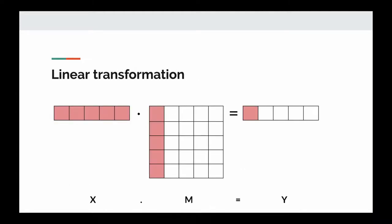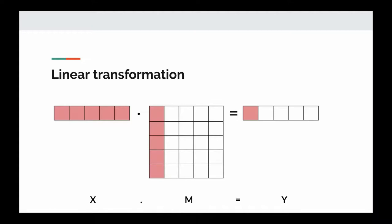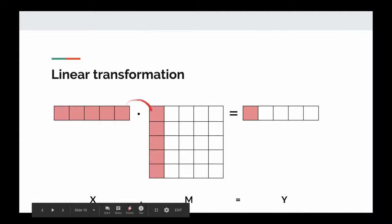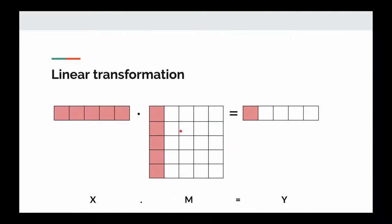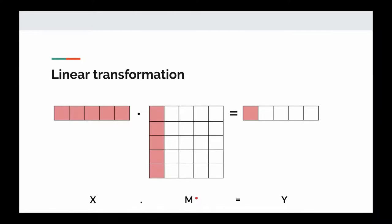Here is the high-level idea of what a linear transformation means. On the left side you have a vector, and after that you see a transformation matrix — that can be defined by anyone, either handwritten by a programmer or learned by a program. This matrix transforms the input vector on the left to the output vector on the right. We take a dot product between the input vector and the transformation matrix to produce the output vector. So if we consider the input vector as x and the transformation matrix as m, then x dot m gives y.